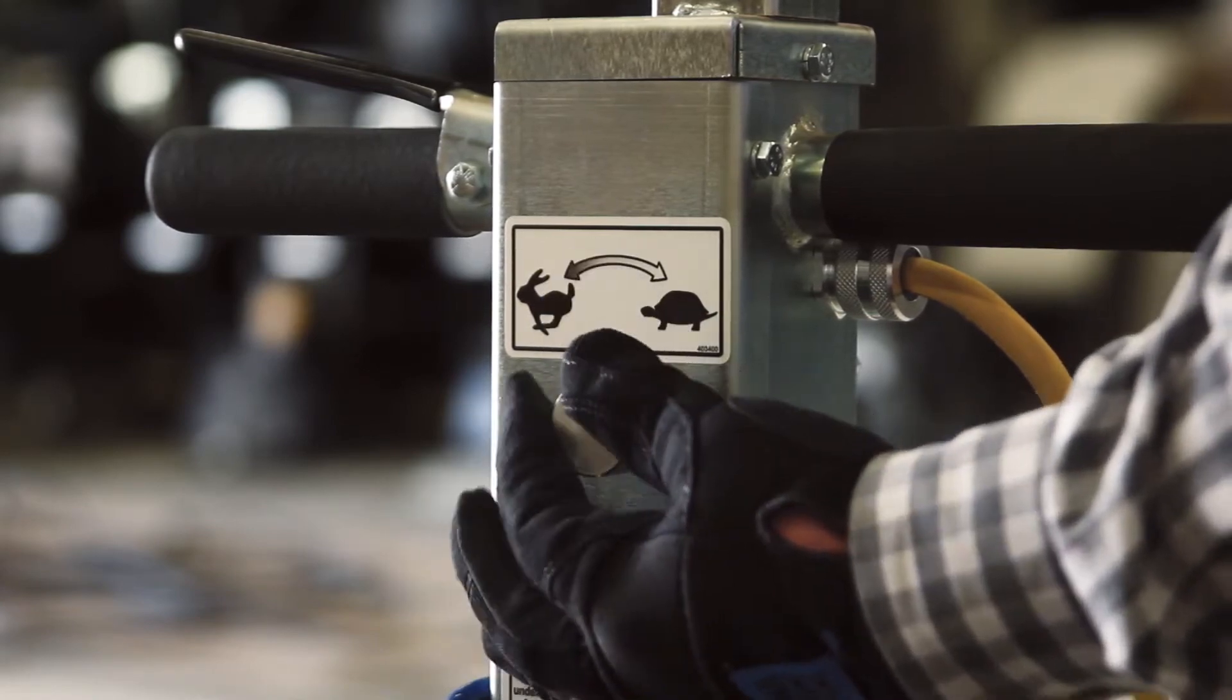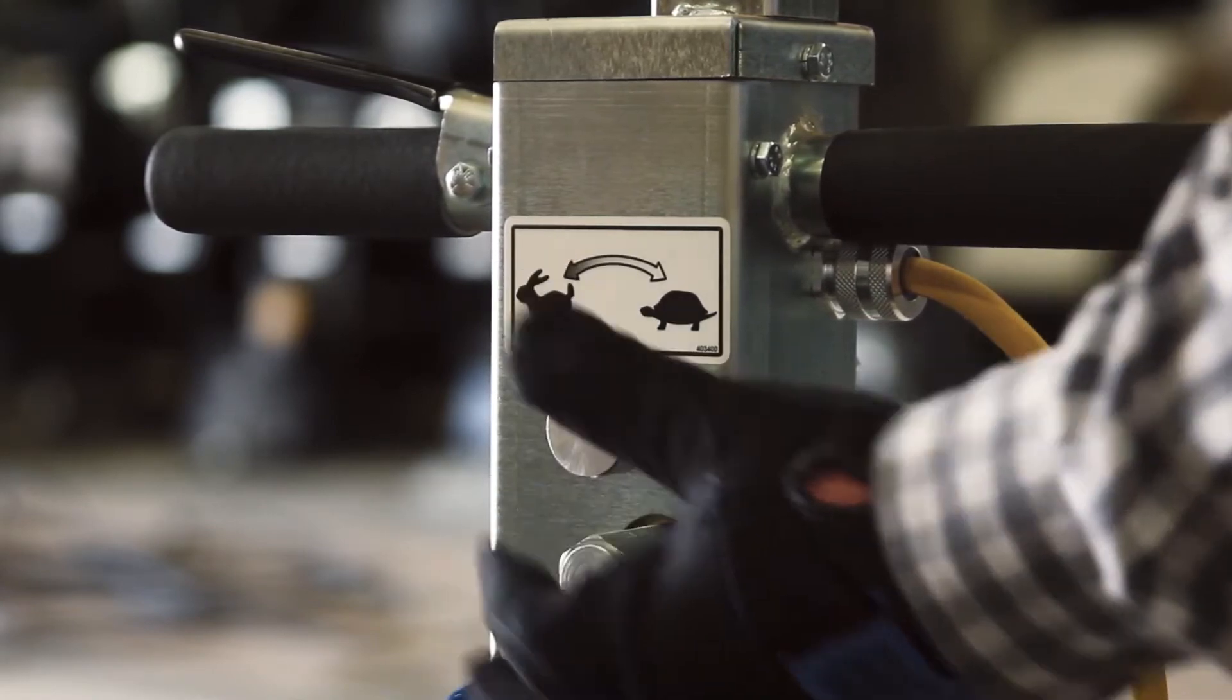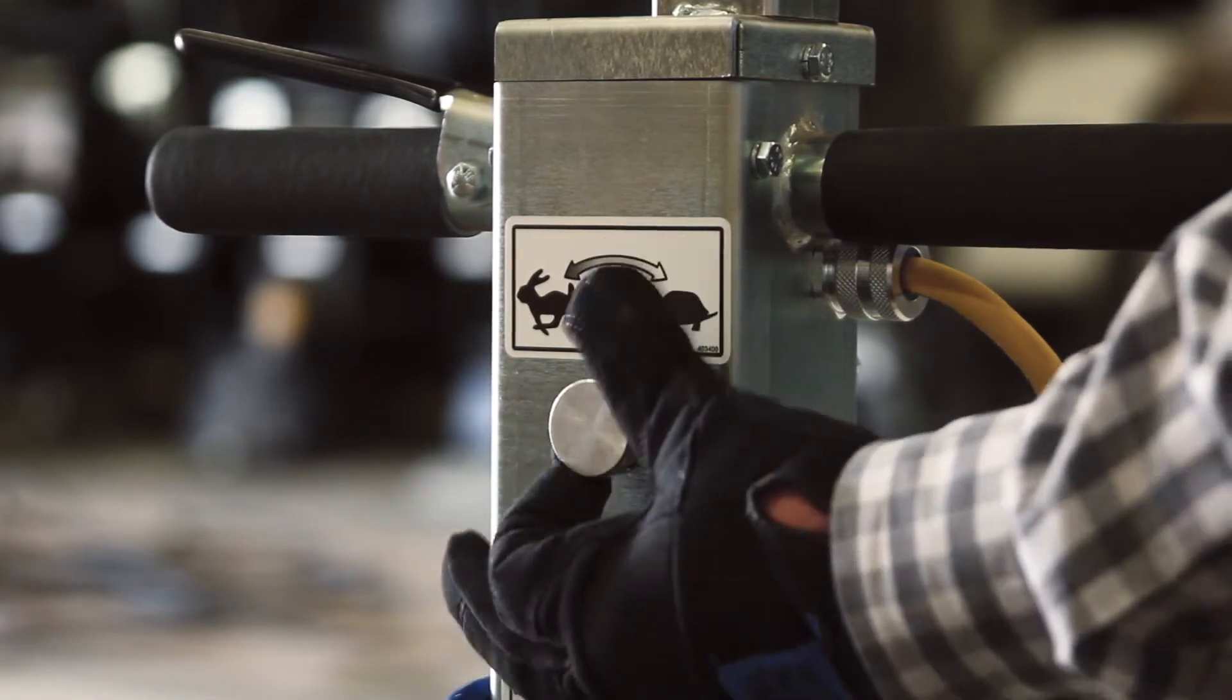Turning the dial on the front of the handle counterclockwise will increase the speed of the machine. Rotating it clockwise does the opposite.